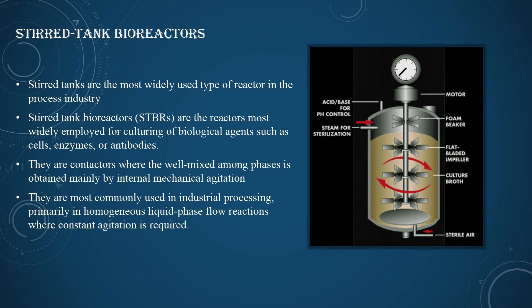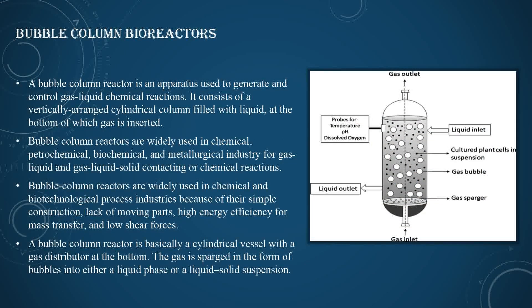In the stirred tank bioreactor figure, we can see components including pumps for steam sterilization, acid and base for pH control, a motor, foam breaker, flat blade impeller, and culture broth. Stirred tank bioreactors are most commonly used in industrial processes, primarily in homogeneous liquid-phase flow reactors where constant agitation is needed.